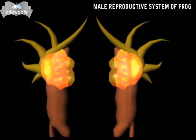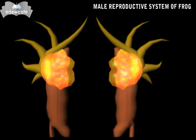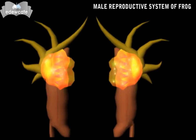Each testis opens into the kidney through 10 to 12 tubes called vas deferentia. Spermatozoa enter the kidney through these tubes.